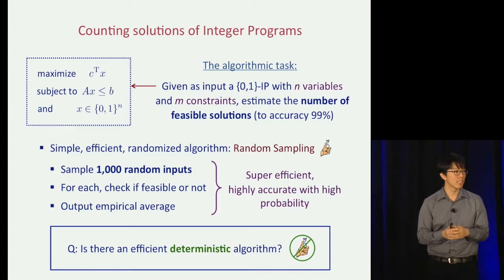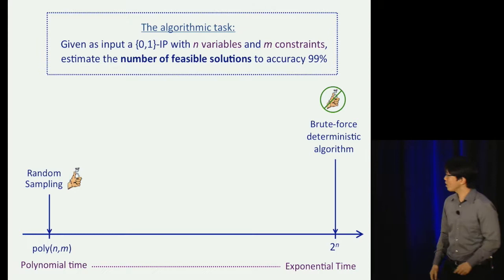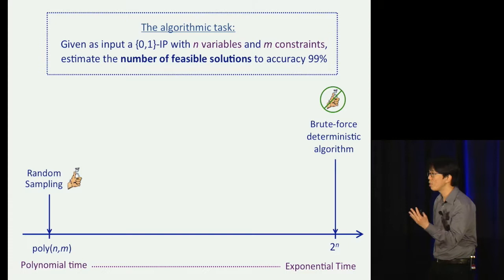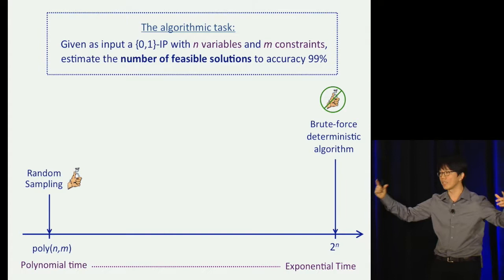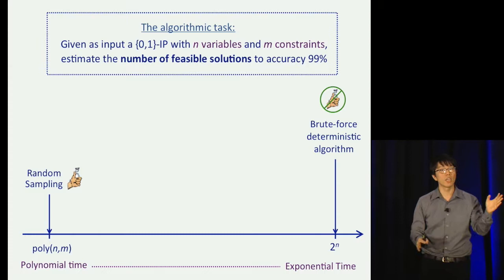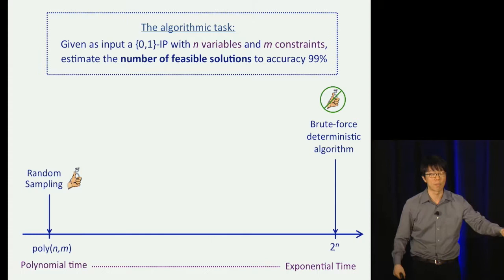What can we do without randomness? With randomness, random sampling solves this problem super-efficiently. There's a very uninspired deterministic algorithm — brute-force search. The input space is 2^n, so by cycling through the entire space we can count feasible solutions, but this is highly inefficient. It's the equivalent of conducting a poll in California by speaking to all 40 million people. So we see a huge gap between the power of random sampling and the brute-force deterministic algorithm.